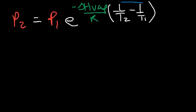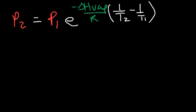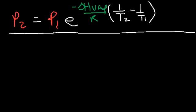This entire term is the exponent of E. E is a number — approximately 2.718 — and it's the inverse of the natural log function. On your calculator, type second natural log or shift natural log to get the E button. Use this form of the equation when you need to calculate the second vapor pressure at a different temperature.